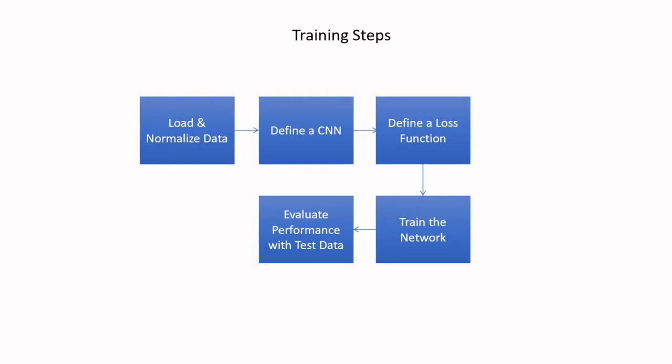The process of carrying out training consists of five steps: first, load and normalize the data so it is suitable for the network; second, define the convolutional neural network — how many layers, filter sizes, etc.; third, define a loss function; fourth, train the network; and fifth, evaluate performance on the test data.